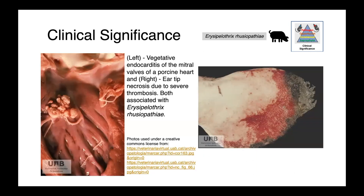On the left, you can see a pig heart which has been opened up. What I hope you can appreciate is the presence of vegetative lesions on the mitral valve — these large, cauliflower-like structures are highly abnormal. This is the growth of bacteria and proliferative lesions associated with bacterial valvular endocarditis. And then on the right, we have ear-tip necrosis due to severe thrombosis — clotting preventing blood flow to those terminal capillary beds, leading to necrosis of tissues.